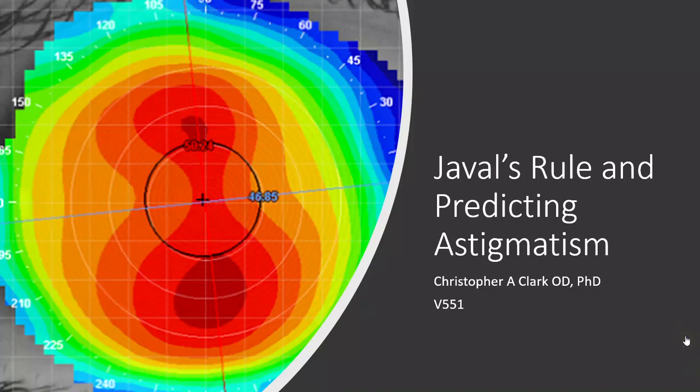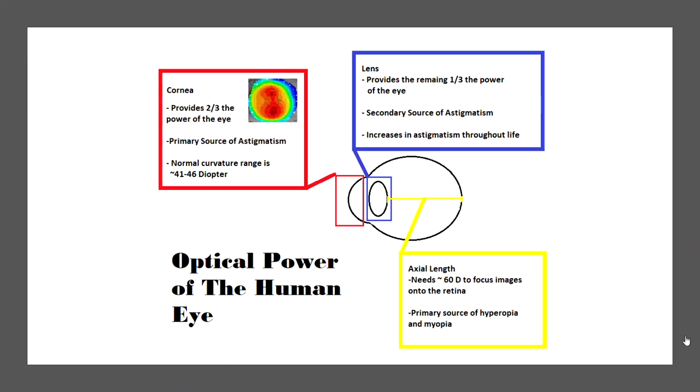This is Javal's Rule in Predicting Astigmatism for V551. Let's review quickly the optical power of the human eye.